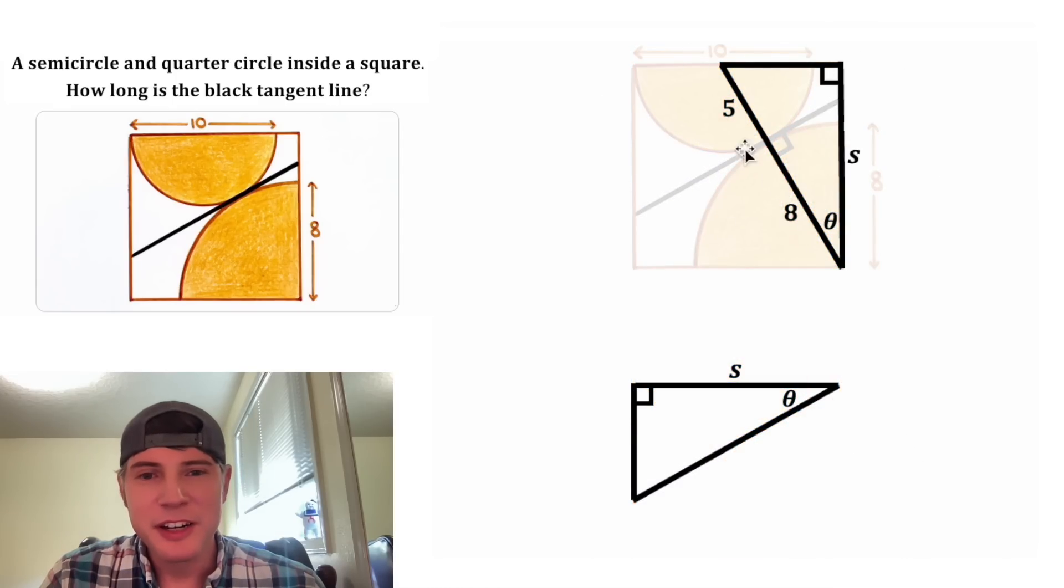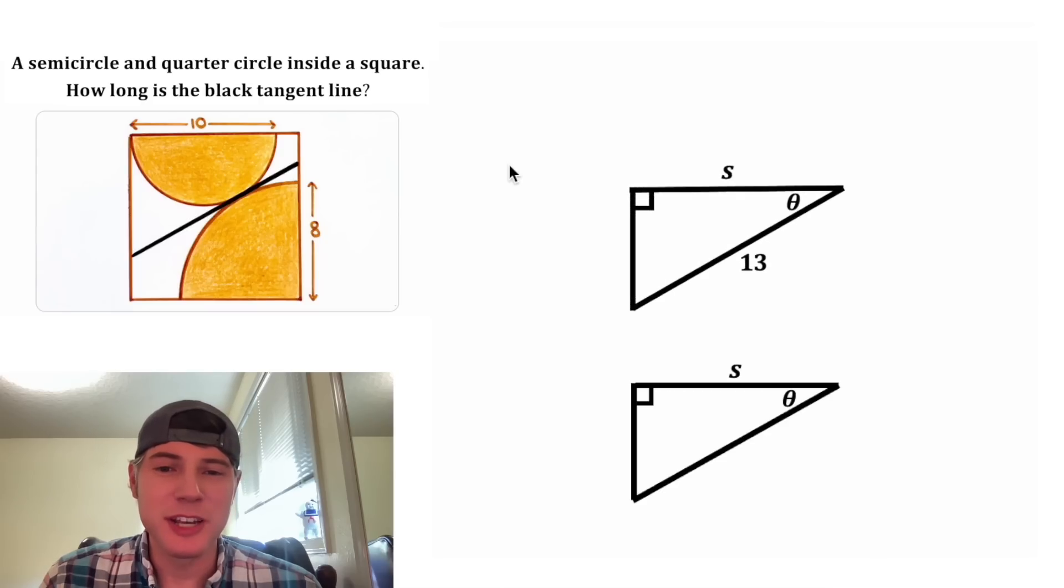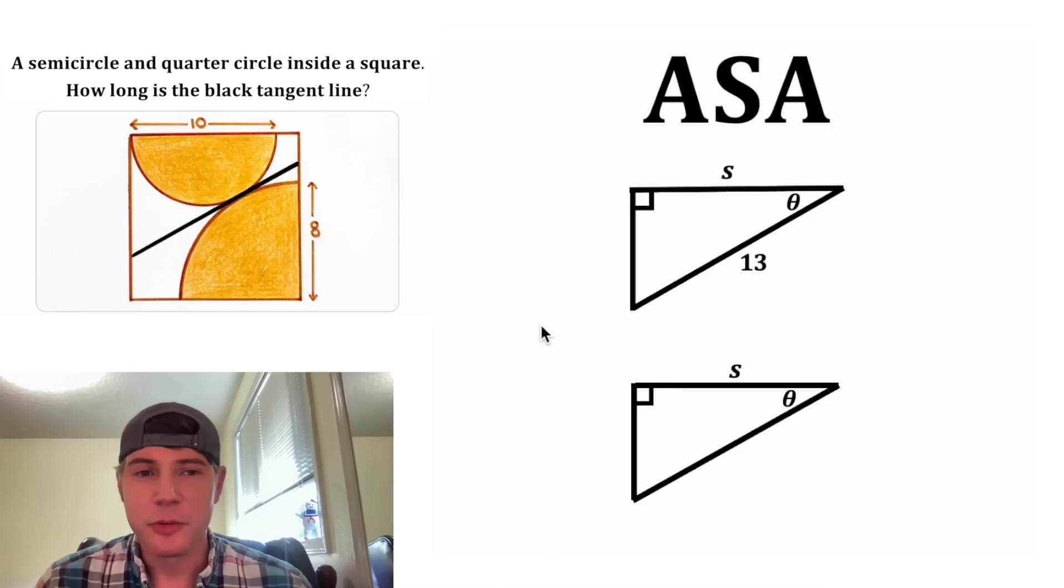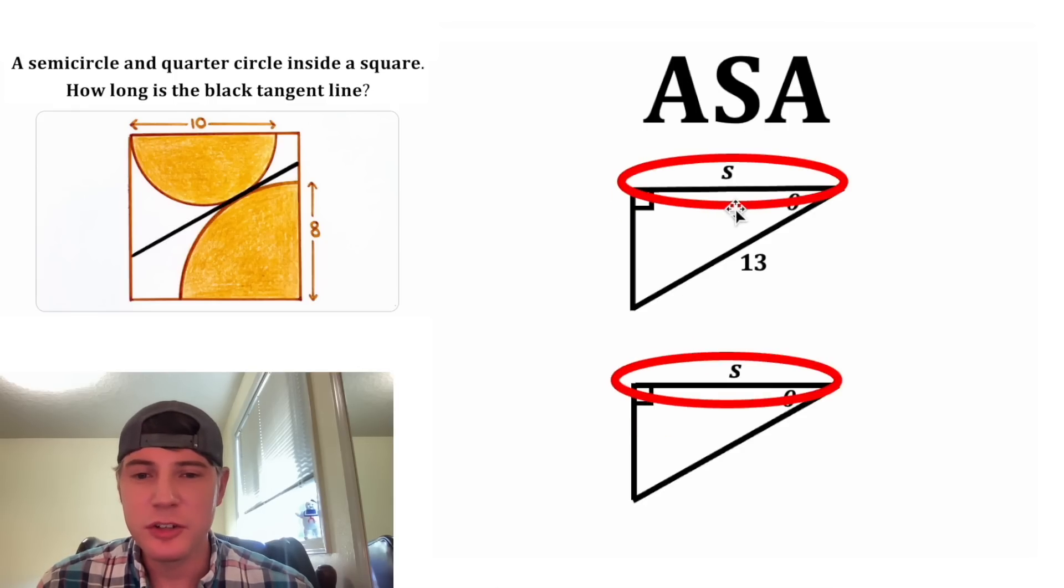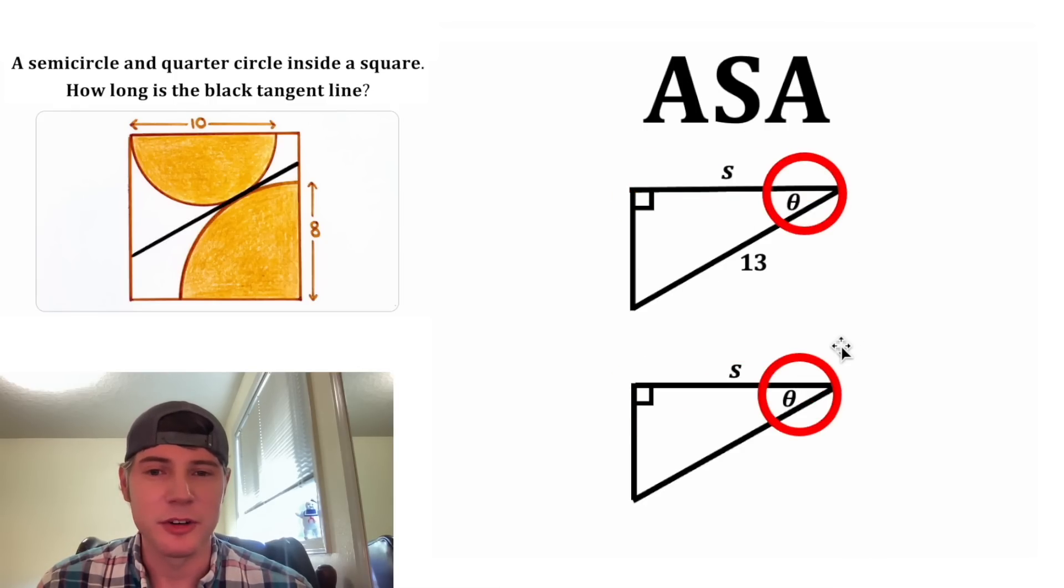For this triangle up here on the hypotenuse, the 5 and the 8 will add together to give us 13. And now let's rotate this one. Now we have these two triangles lined up, and they are congruent. The reason we know they're congruent is because of ASA, which stands for angle-side-angle. That's because we have these two angles congruent, we have these two sides congruent, and we have these two angles congruent.